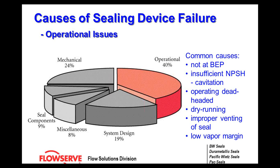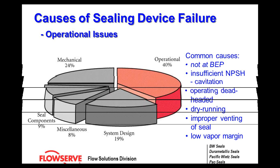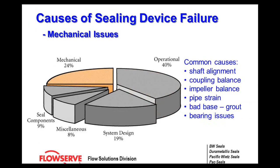Low vapor margin: these are flashing fluids. Generally hot hydrocarbons will flash at atmospheric conditions, so as the fluid film passes across the mechanical seal it can flash on the atmospheric side and cause a failure. Another common example would be boiler feed situations where you have hot water at 250 or 280 degrees, which will also give you a flashing situation.